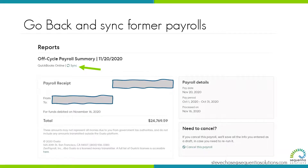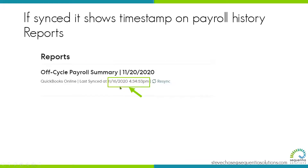Let's say that you set up Gusto and you've got some payroll in the past that you want to work with. The auto-sync settings is only going to cover you for future payrolls that you do. So you might need to go back in time to sync the prior history of the year. If that's the case, run the former payrolls history report. When you land on the payroll, you can click the sync button. When you click it, it will then show you the time that you did it — that timestamp lets you know if it did sync over.